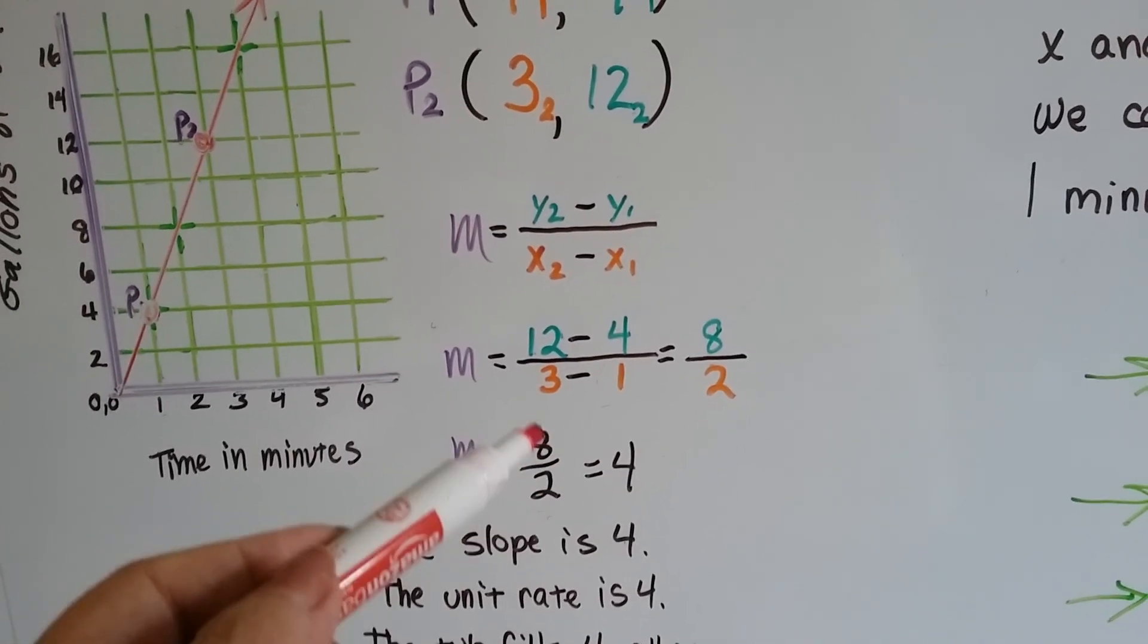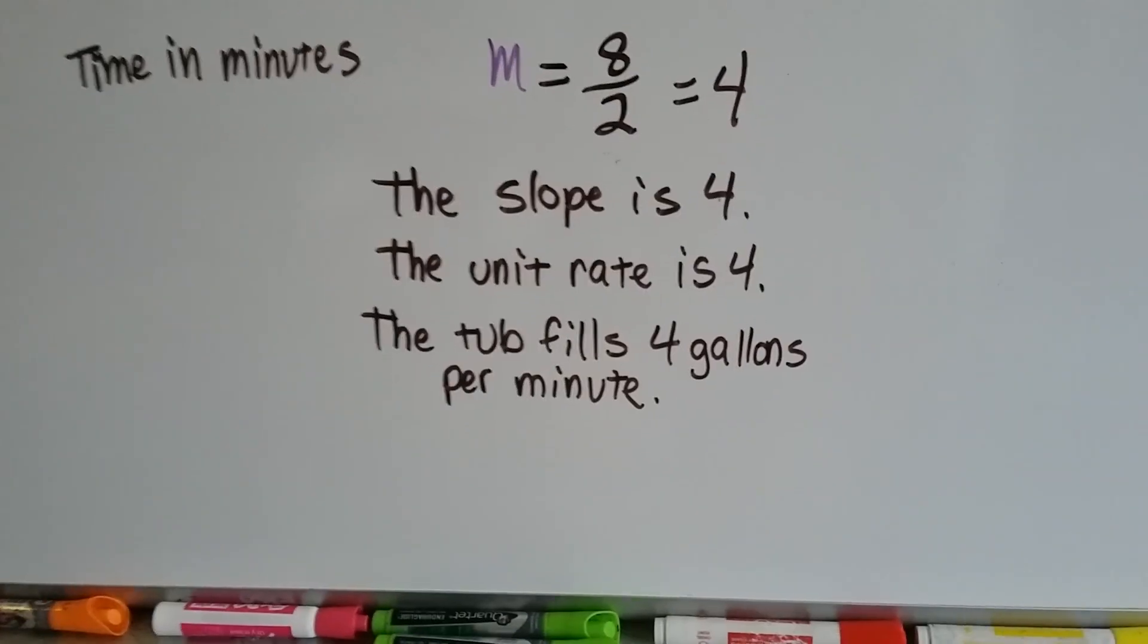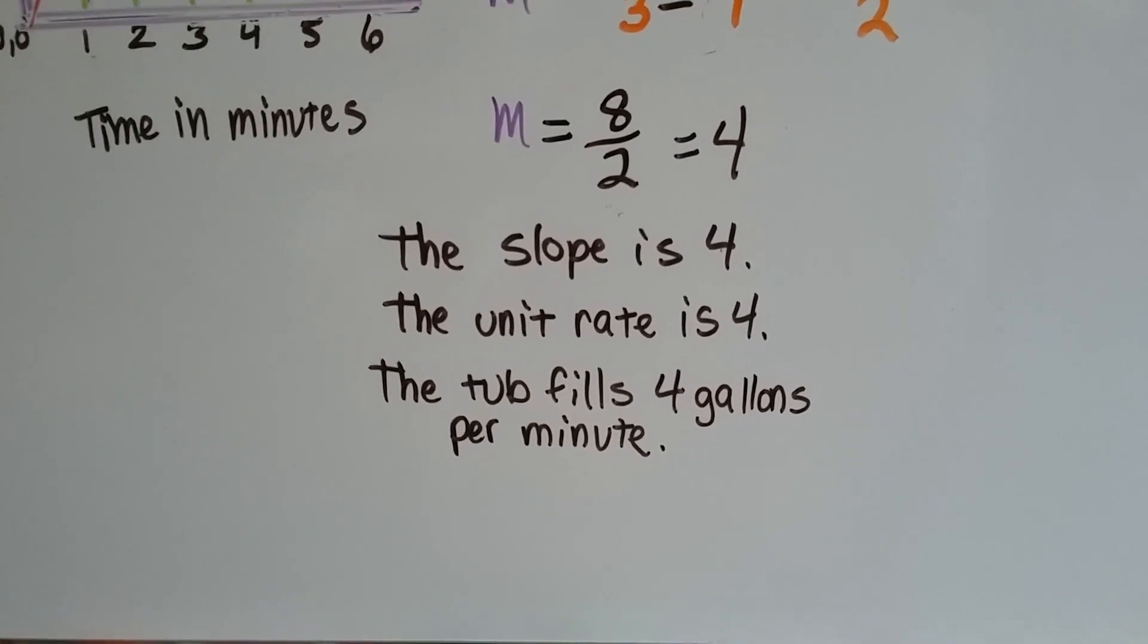So that means our slope is eight over two, and we simplify it. Eight divided by two is four. We know the slope is four. The unit rate is four. The tub fills four gallons per minute.